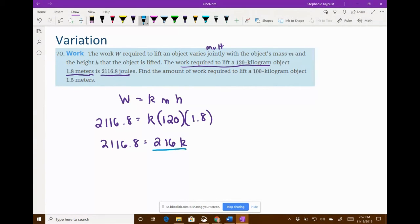So this is going to be 216 K. Now I need to solve for K. So I need to divide both sides by 216. And this is actually coming out. Luckily, we don't have to round. It comes out exactly to 9.8.